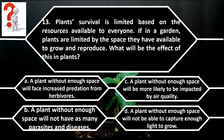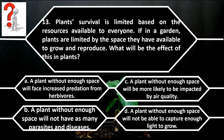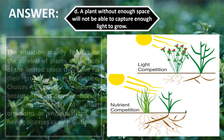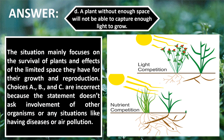Number 13. Plants' survival is limited based on the resources available to everyone. If in a garden, plants are limited by the space they have available to grow and reproduce, what will be the effect on the plants? A. A plant without enough space will face increased predation from herbivores. B. A plant without enough space will not have as many parasites and diseases. C. A plant without enough space will be more likely to be impacted by air quality. D. A plant without enough space will not be able to capture enough light to grow. The correct answer is letter D. The situation focuses on the survival of plants and effects of limited space for growth and reproduction. Choices A, B, and C are incorrect because the statement doesn't involve other organisms or situations like diseases or air pollution.